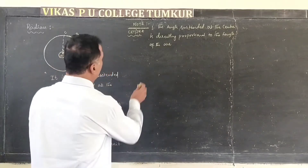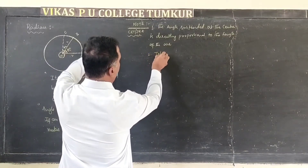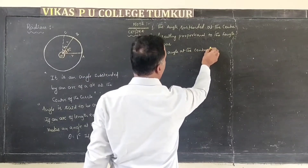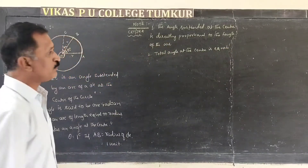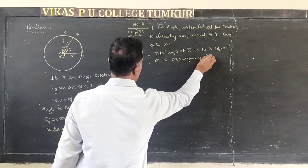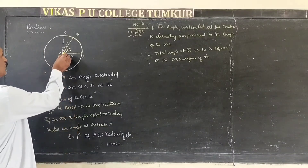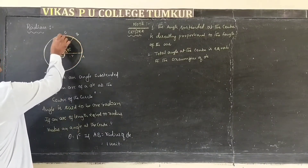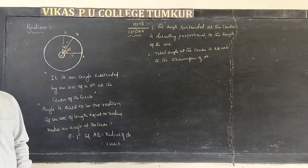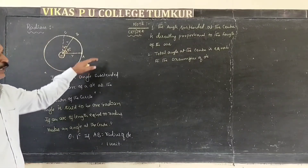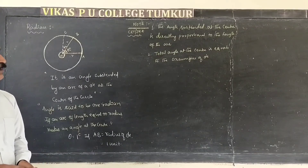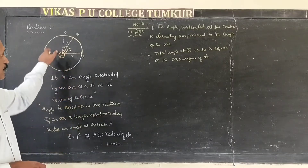The total angle at the center is equal to the circumference of the circle — which is the total arc length, nothing but the circumference. For a unit circle, one radian corresponds to arc length equal to one unit, and the total circumference is 2πr. So the circumference of the circle is 2πr, and the angle at the center corresponds to one radian.